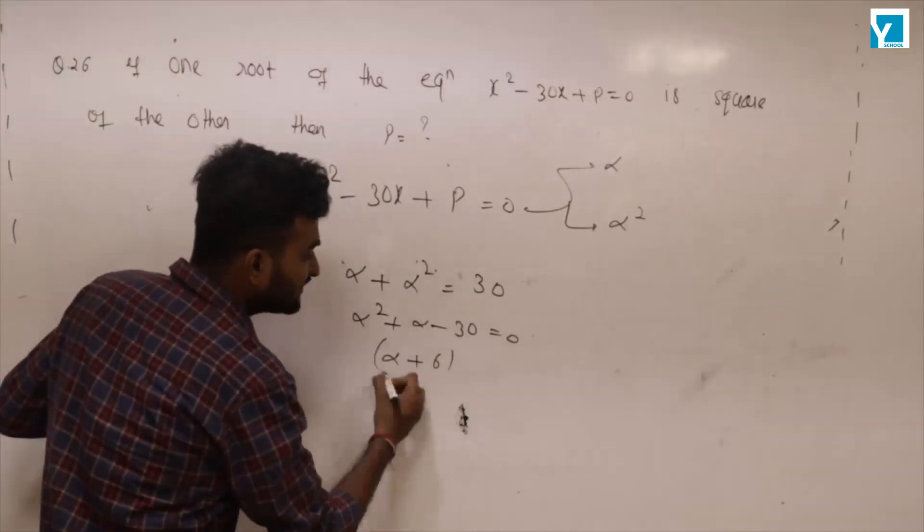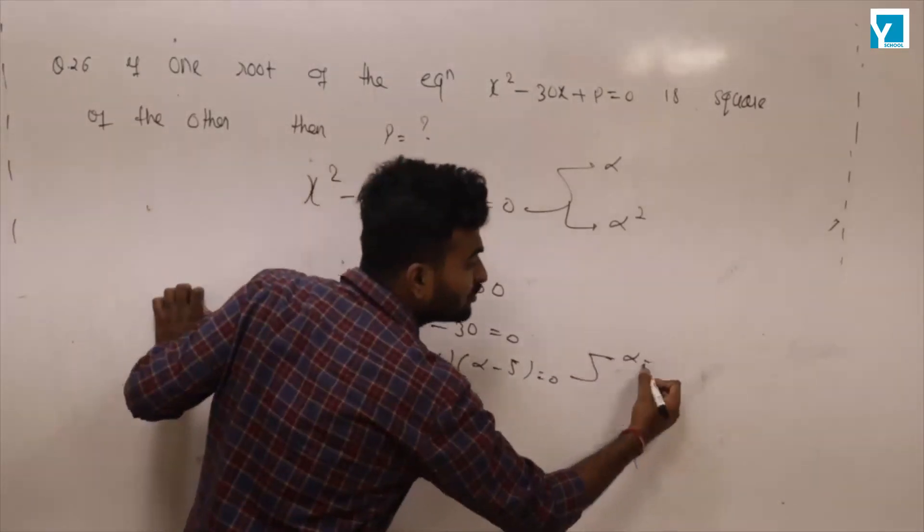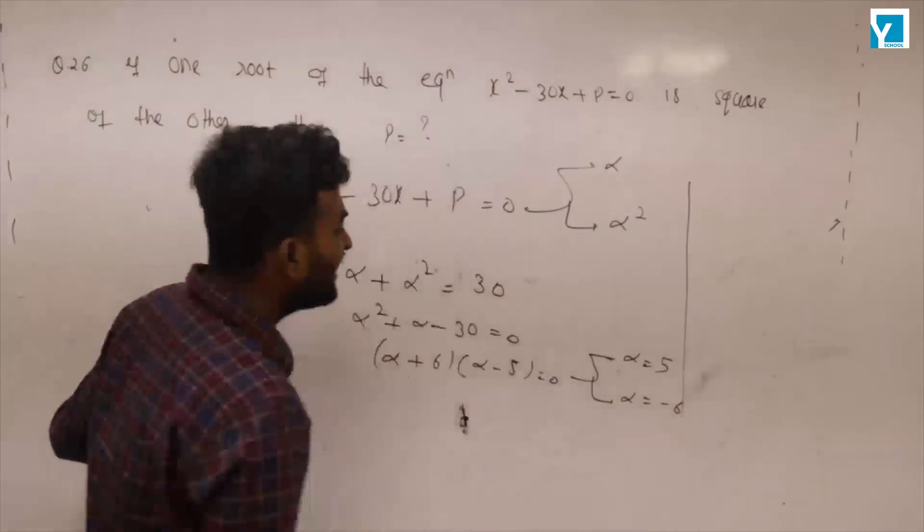Factoring gives alpha plus 6, alpha minus 5, so alpha equal to 5 or minus 6. And similarly we can say,